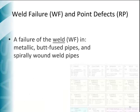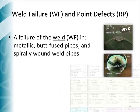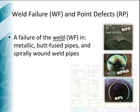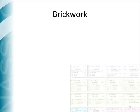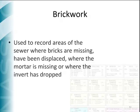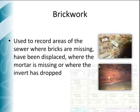The weld failure defect group is used to record defects of the weld or seam in the pipe fabric. These defects can occur on large diameter plastic, spirally wound welded pipes, butt fused pipes, or metallic pipes. Point repairs, or RP, are used to record where part of the pipeline has been repaired or replaced. The codes are applicable to localized pipeliners, patch repairs, and others. Brickwork is used to record areas of the sewer wall where bricks or mortar is missing, or where the sewer invert is dropped.